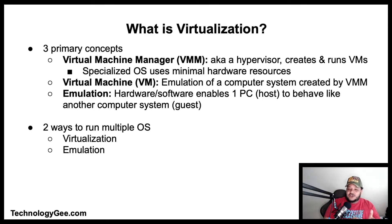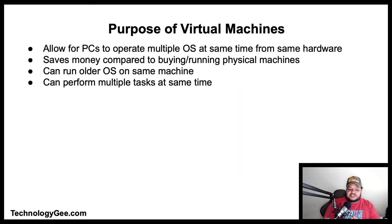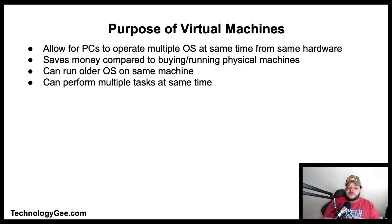The main purpose of virtual machines is to allow computers to operate multiple operating systems at the same time from the same piece of hardware. Without virtualization, operating multiple systems like Windows and Linux would require multiple physical units. Operating virtual machines saves tons of money on costs associated with physical space, cooling, and peripheral hardware.